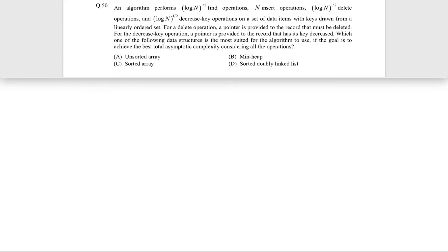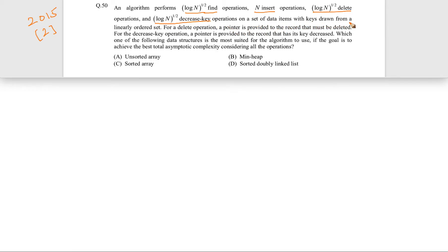This question came in GATE 2015 for two marks. The question is: an algorithm performs √(log n) find operations, n insert operations, √(log n) delete operations, and √(log n) decrease-key operations on a set of data items with keys drawn from a linearly ordered data set.